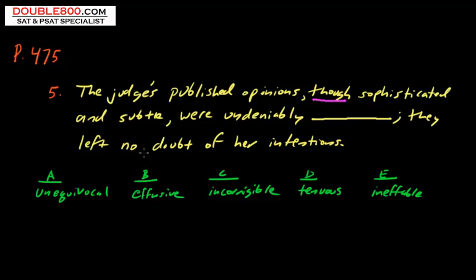And here's one more phrase that gives you definitive insight into the key words. They left no doubt. So even though they were subtle, they were undeniably blank, the opposite of subtle, they left absolutely no doubt. So we're looking for a word. They were undeniably absolute or undeniably certain, without any doubt.